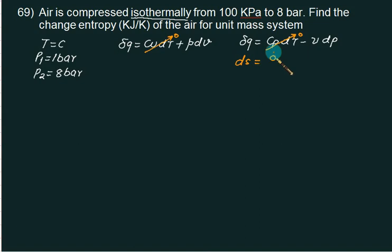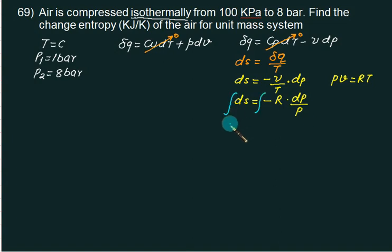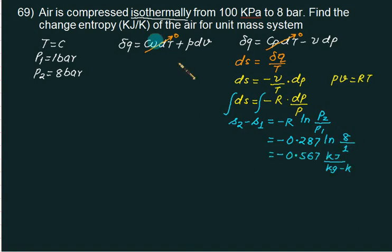Ds is del Q by T. So Ds is minus V by T into dP. PV equals to RT. So Ds equals to minus V by T which is R by P. So this is minus R into dP by P. Integrate. So we get S2 minus S1. This one is lower case, specific quantity minus R. Integral of this quantity is ln of P2 by P1 minus R is 0.287 in kilojoules ln. P2 is 8 and P1 is 1. He says kilojoules per Kelvin for unit mass. Means that kg is hidden there.